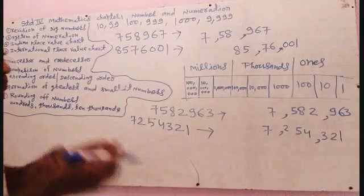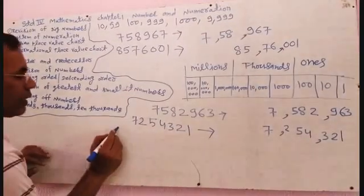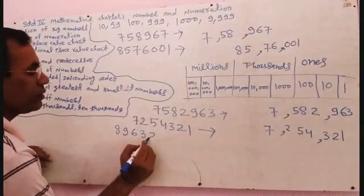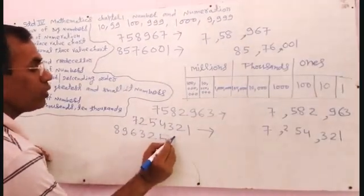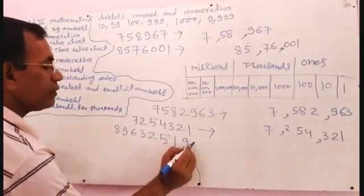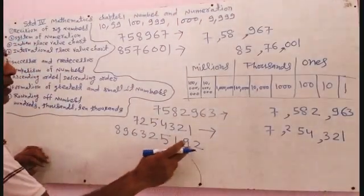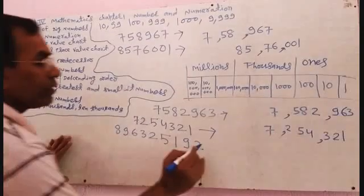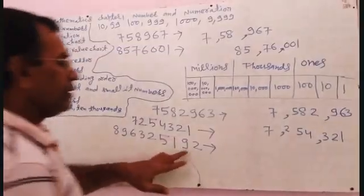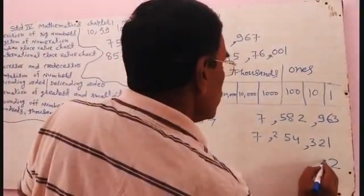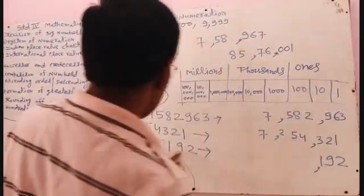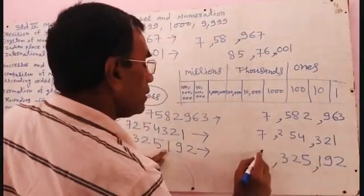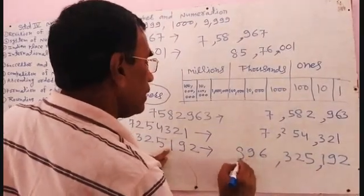Now I am going to do another example. The number given is: 8, 9, 6, 3, 2, 5, 1, 9, 2. Let me arrange this into groups of three from the right: 2, 9, 1 — comma — 5, 2, 3 — comma — 6, 9, 8.